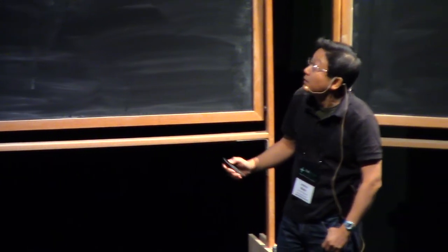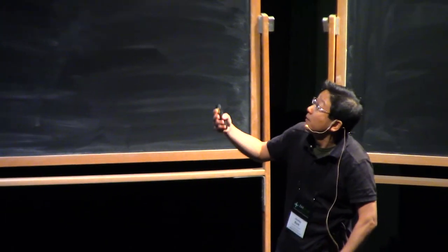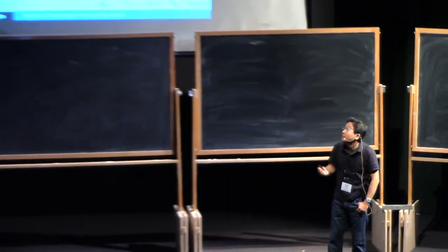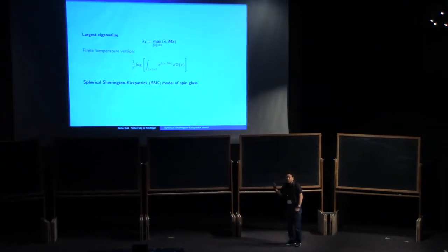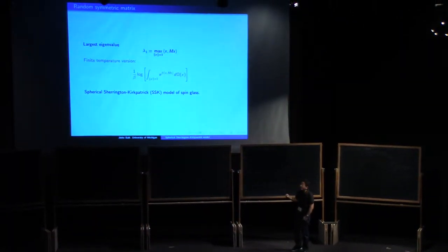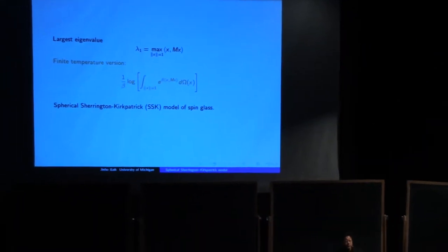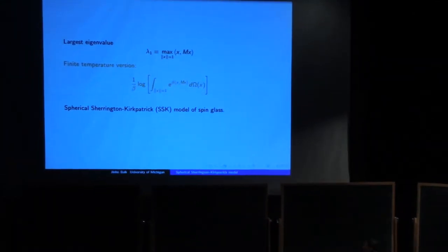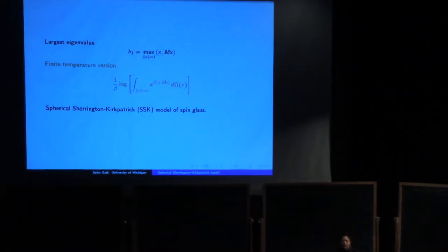Let's think about the random matrix largest eigenvalue. By the minimax principle, this is the maximum of a quadratic form where X is an n-dimensional vector with norm 1. We know lots of things about this lambda_1 for symmetric matrix M.